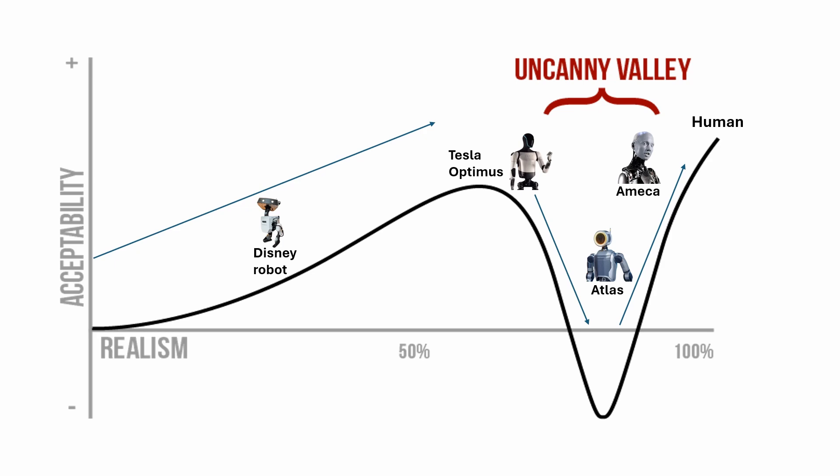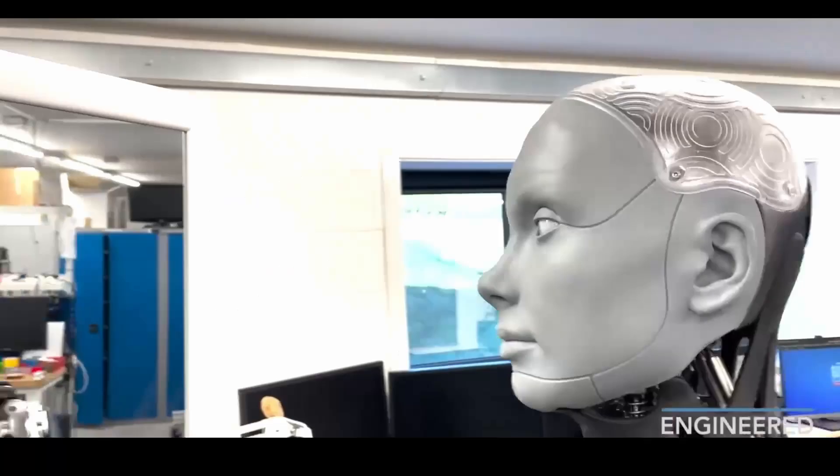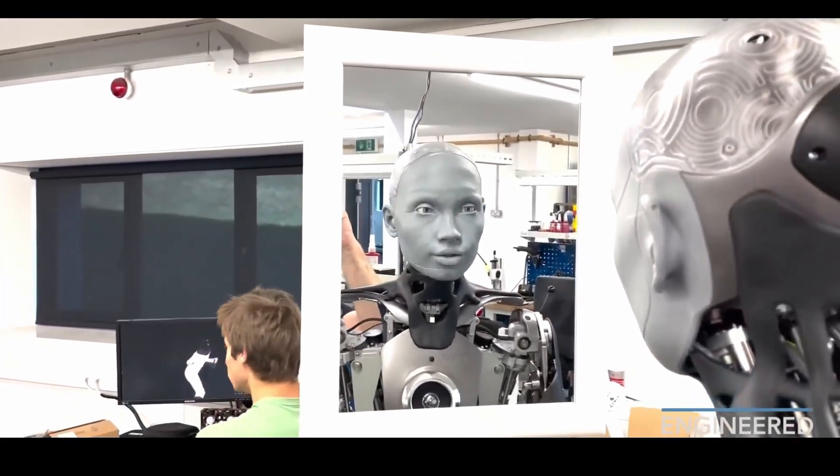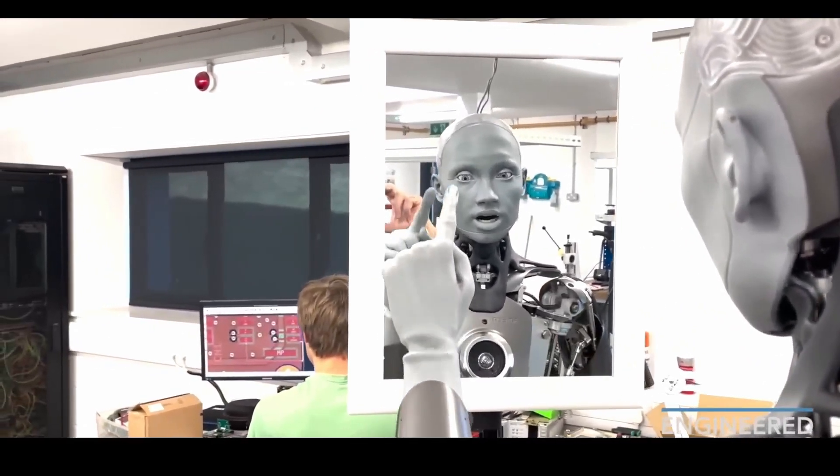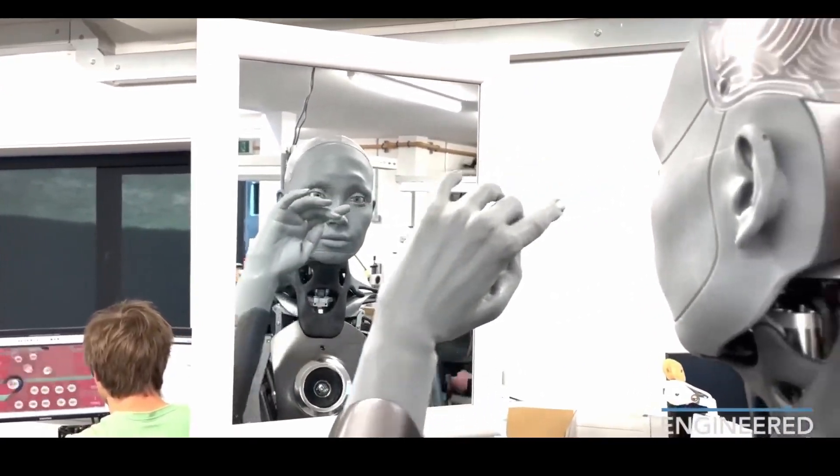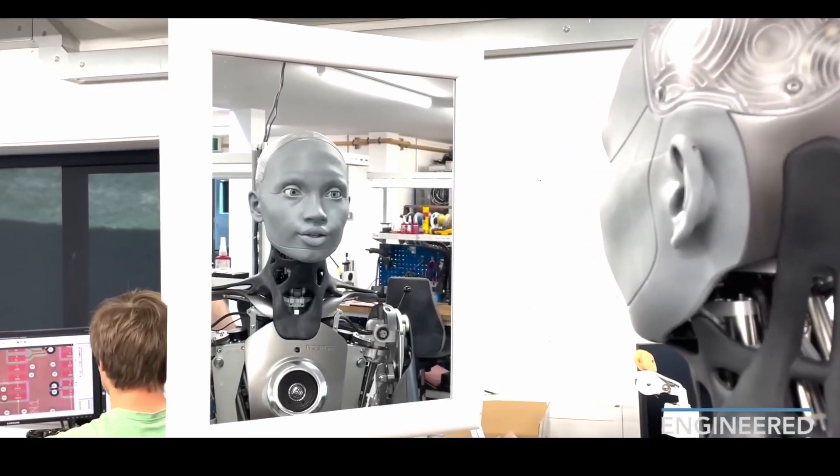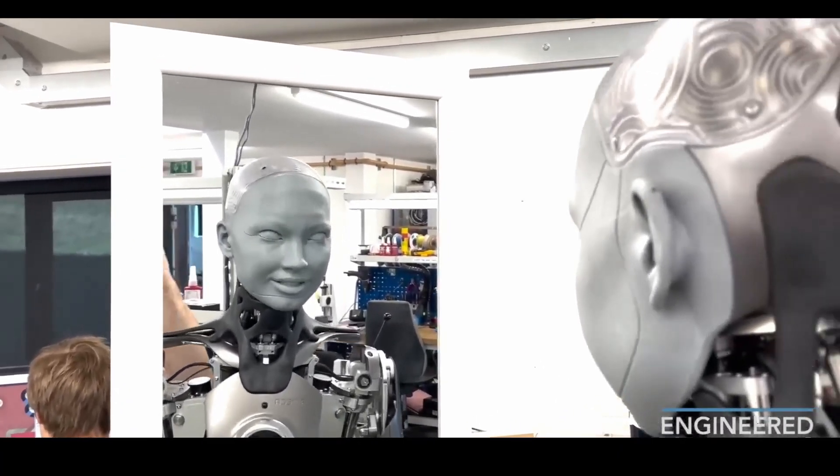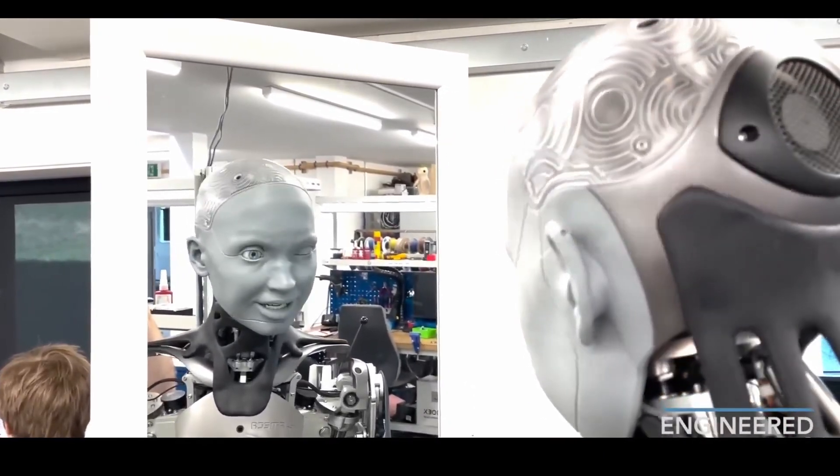Comparatively, Ameka, designed to be the world's most advanced human-shaped robot in terms of realistic facial expressions and interactions, is often perceived as more acceptable to human sensibilities. Ameka is designed by Engineered Arts, specifically as a platform for development into future robotics technologies, focusing on human-robot interaction.